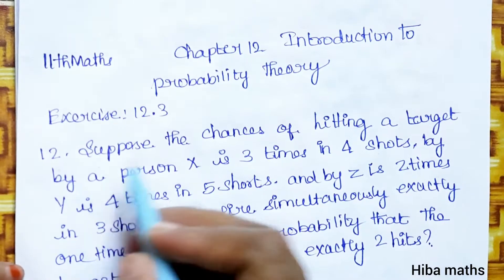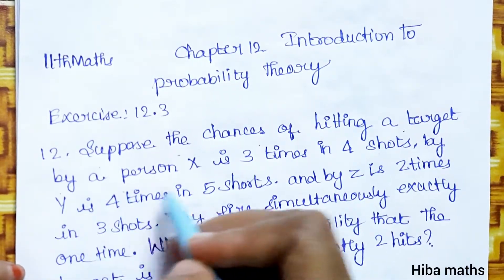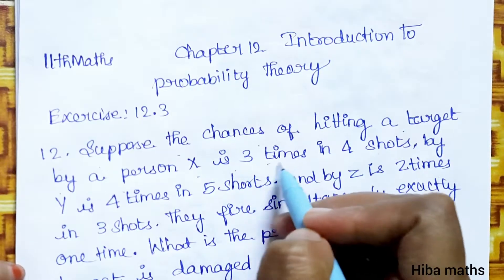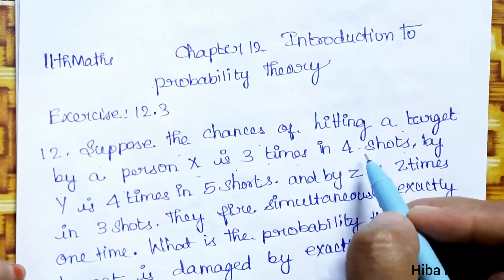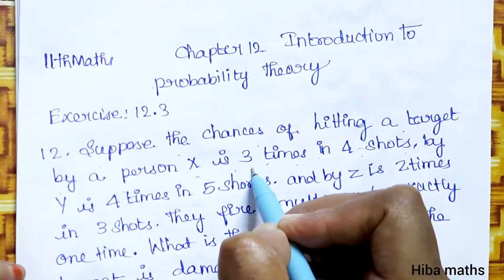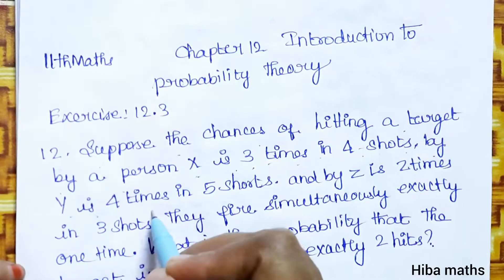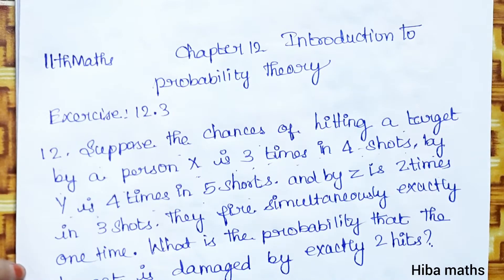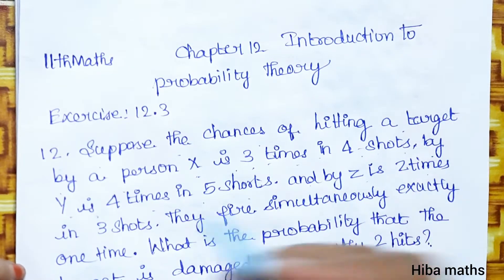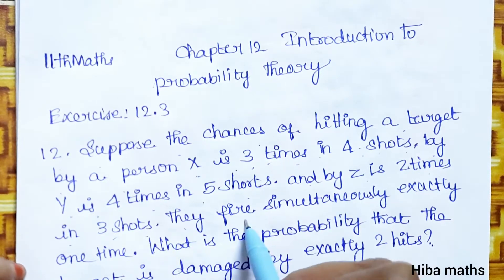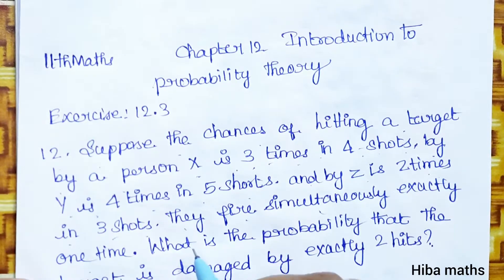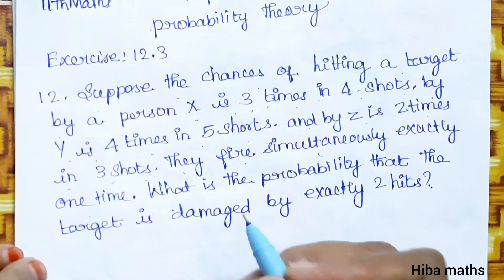Suppose the chances of hitting a target by person X is 3 times in 4 shots, by Y is 4 times in 5 shots, and by Z is 2 times in 3 shots. They fire simultaneously — exactly one shot each. What is the probability that the target is hit by exactly 2 hits?